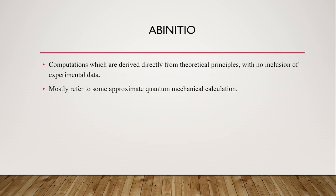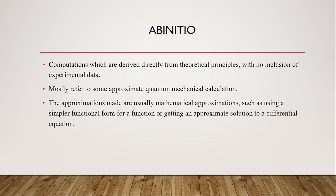The ab initio method is based on purely theoretical principles and does not include any experimental data. If you don't know anything about the molecule, you can depend on the ab initio method because it calculates everything theoretically and is independent of experimental data. The disadvantage is that it requires a lot of time to complete and is also very computationally expensive.